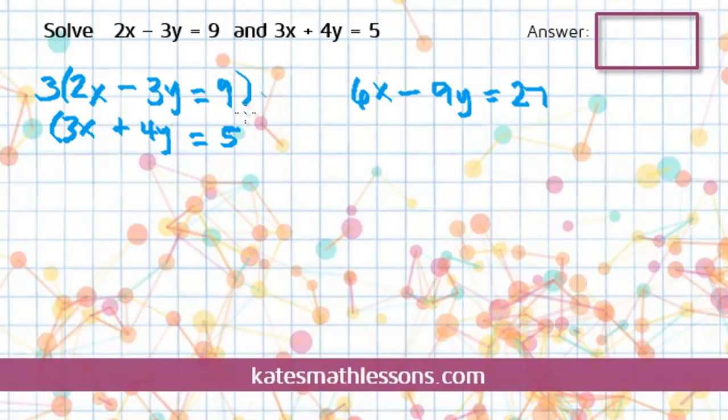For the second one, we need it to cancel with this 6x here. So we need a negative 6. So in order to do that, I'm going to multiply everything by negative 2. So that gives me a negative 6x. Negative 2 times 4 is a negative 8y. And then 5 times negative 2 is negative 10.